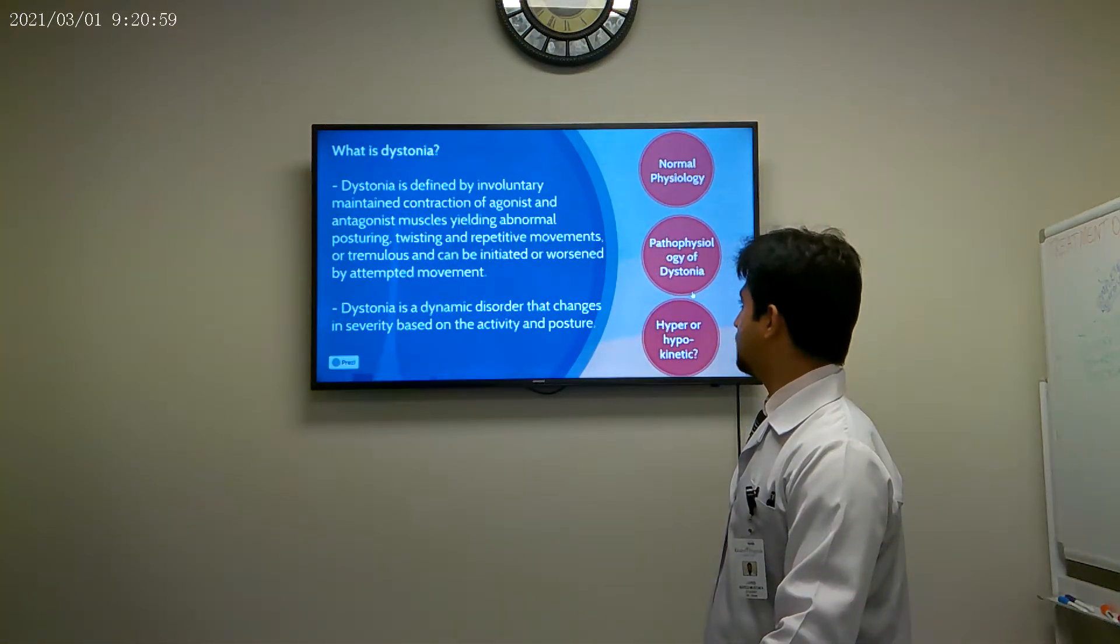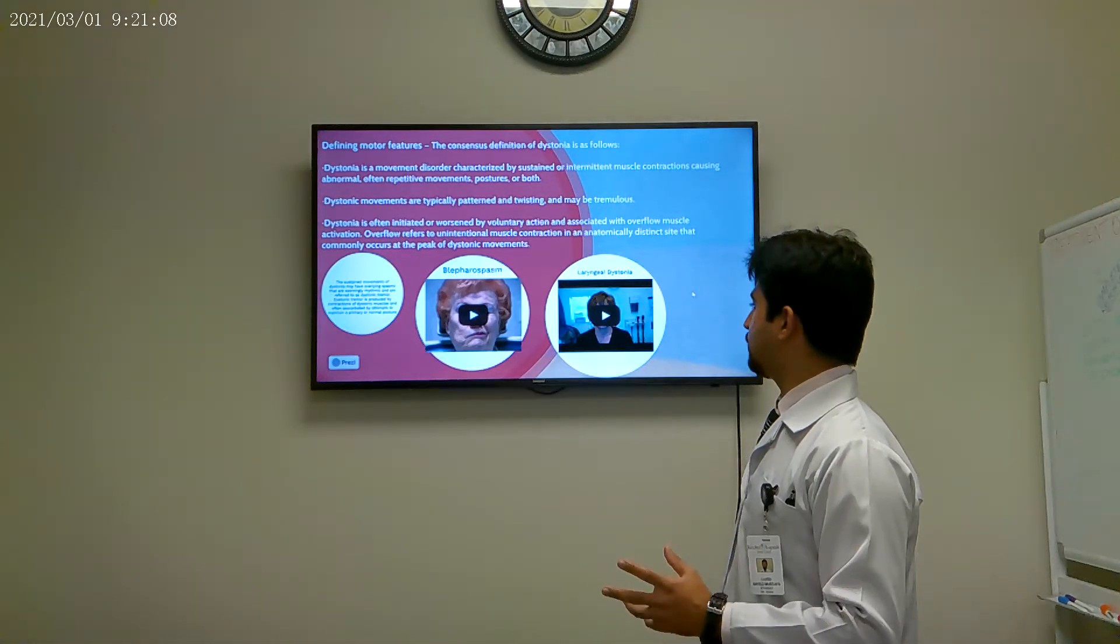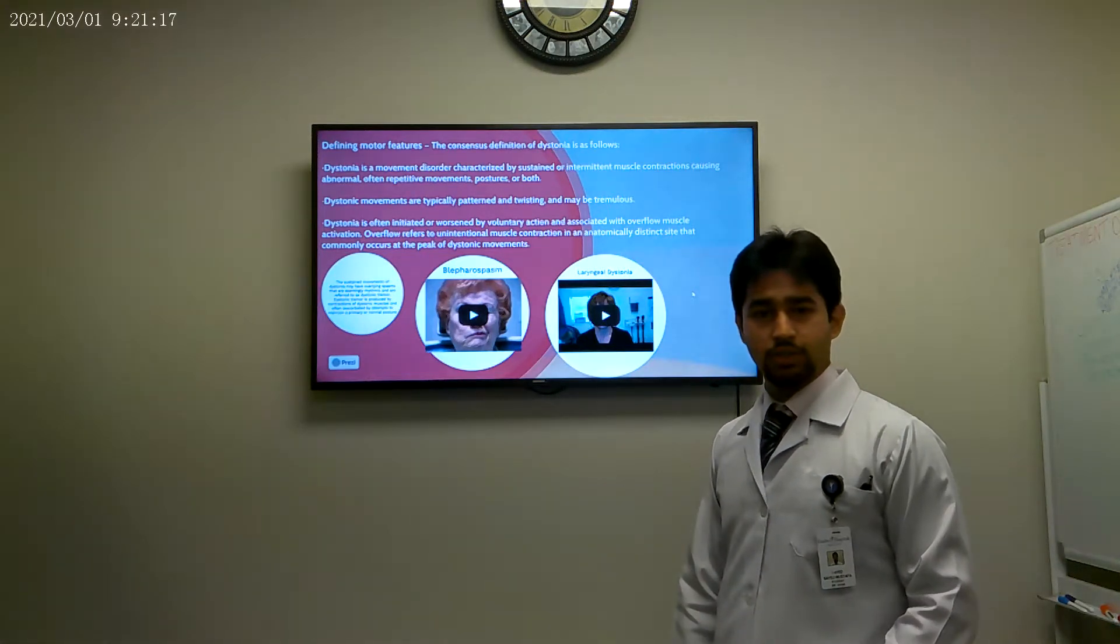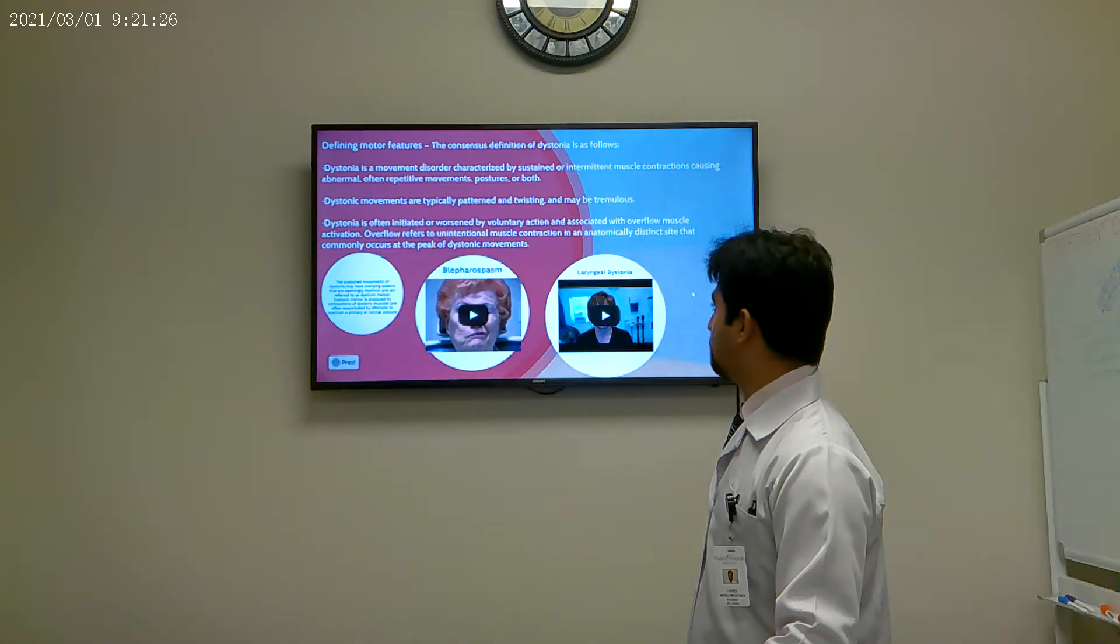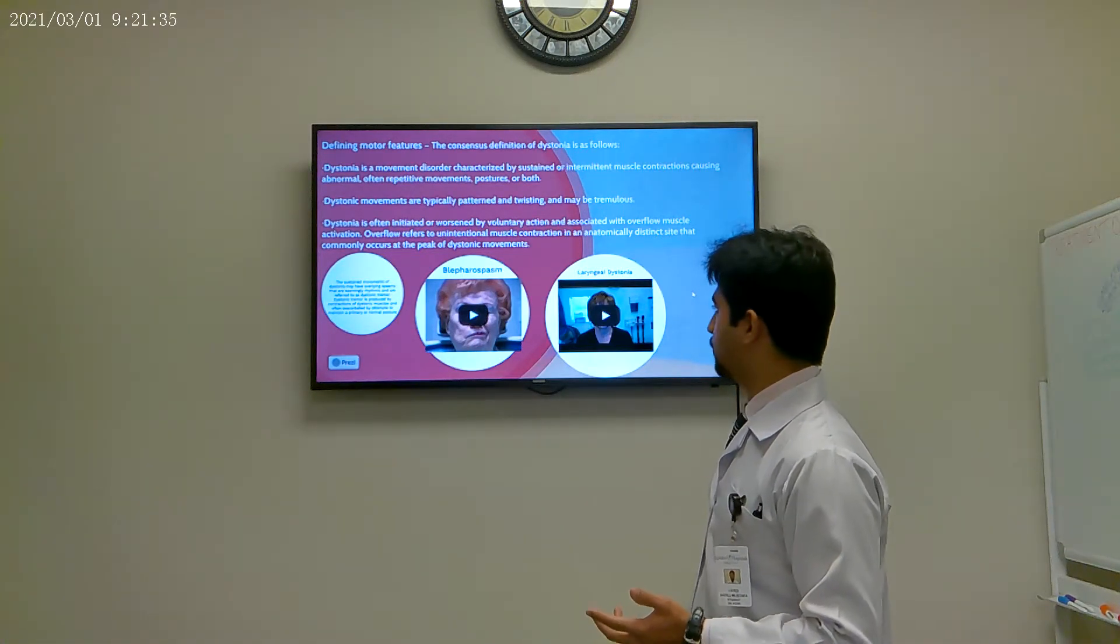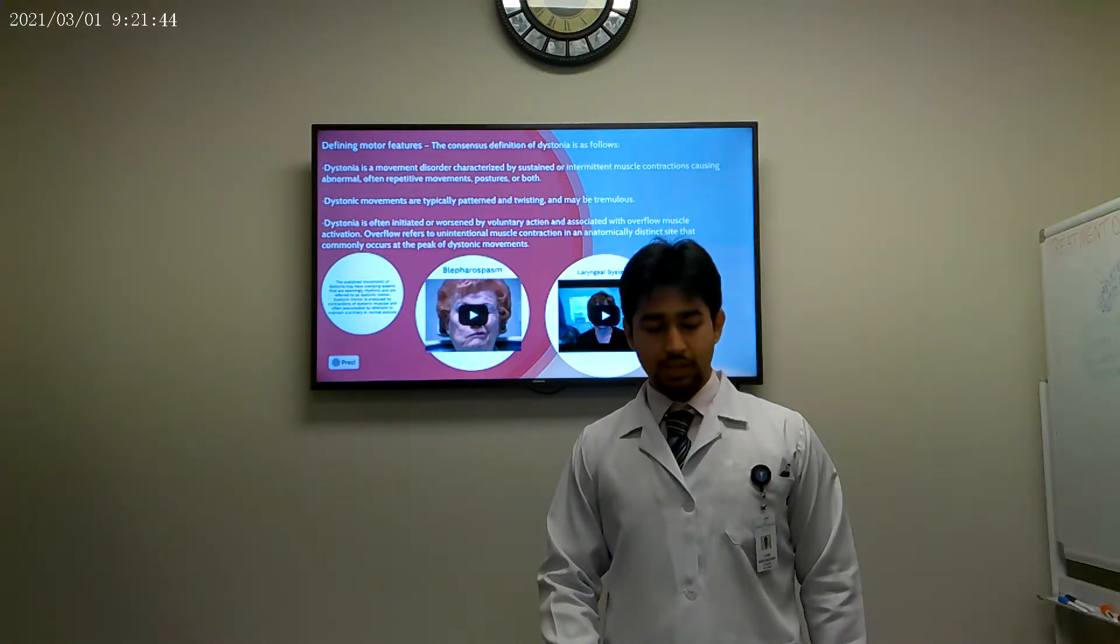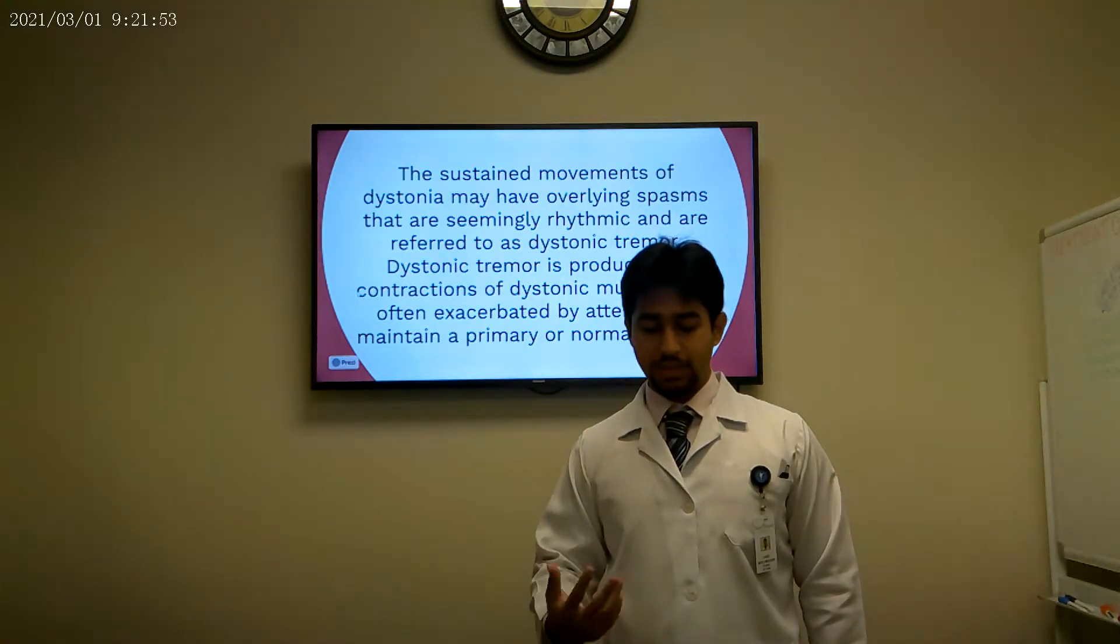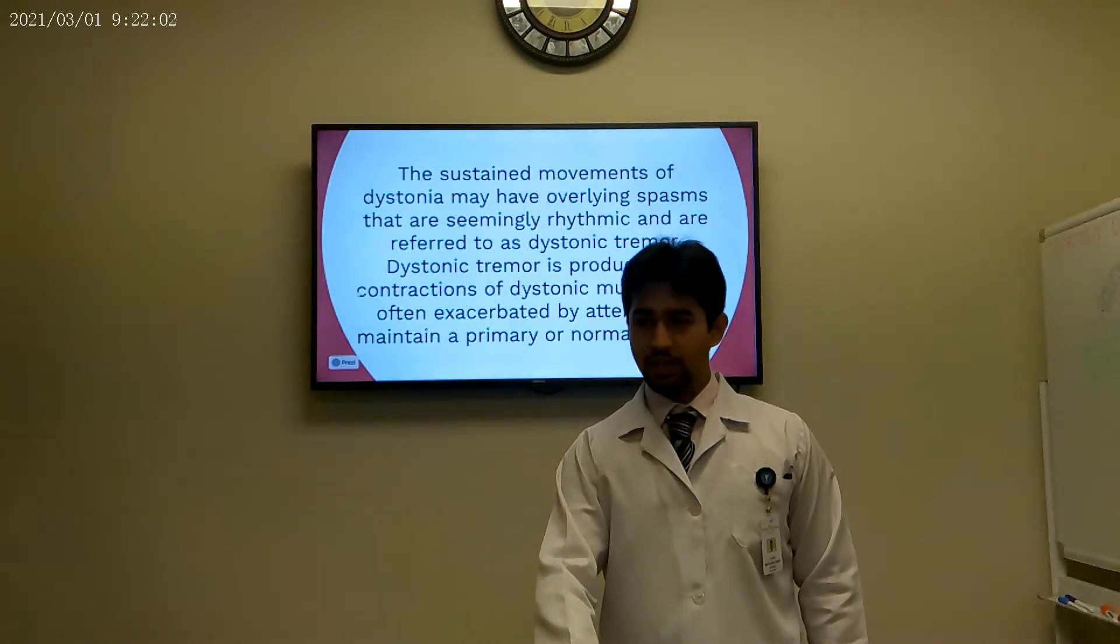So now we've got our gist. We know what dystonia is. We know why it happens. We're going to look at the patients now. So to understand the motor features of dystonia, we need to know that dystonia, because it can affect so many different muscle groups and so many different parts of the body, it can give you a very diverse picture of what it looks like. The classic idea that comes to mind when thinking dystonia would be someone who has cervical dystonia, which is sustained contractions of your neck muscles. And that is indeed one of the most common. Dystonias can also be patterned, twisting, and rhythmic or tremulous. And as we mentioned, they can be initiated or worsened by voluntary action. And this is due to a phenomenon known as the overflow of muscle activation. The overflow activation means that there is unintentional muscle contraction in an anatomically distinct site at the peak of dystonic movement.